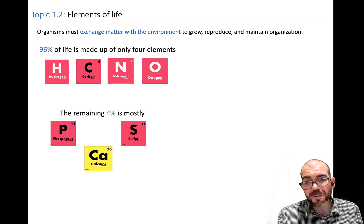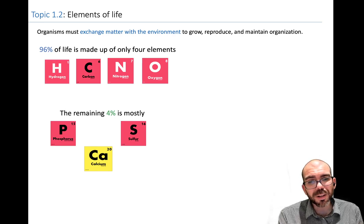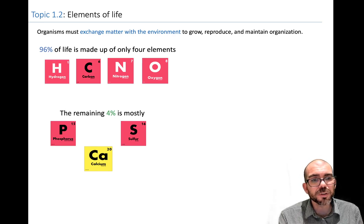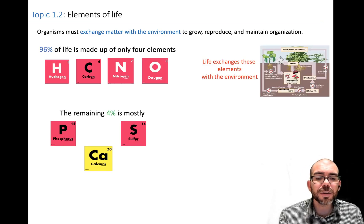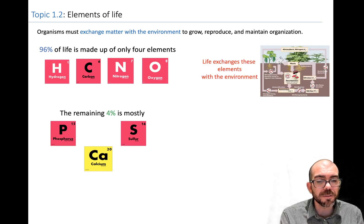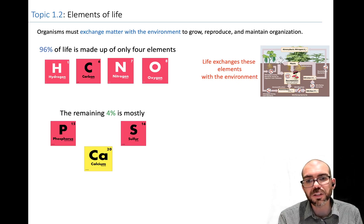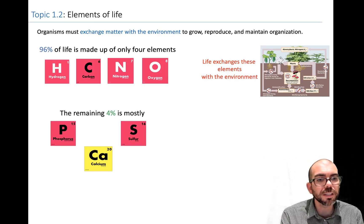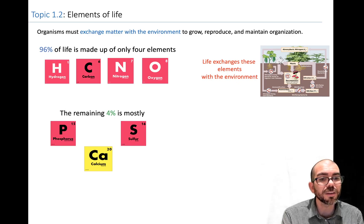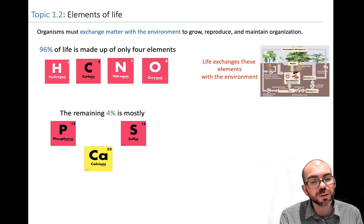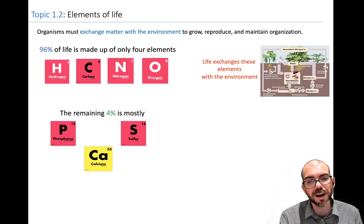The thing is, everything on Earth is limited. How are organisms going to be able to get these elements to grow, reproduce, and maintain organization? They're going to be exchanging this matter with their environment. Everything on Earth is interdependent. You have these non-living atoms cycling through living organisms, and those living organisms, through their waste and through death and decay, return those atoms back to the non-living environment.